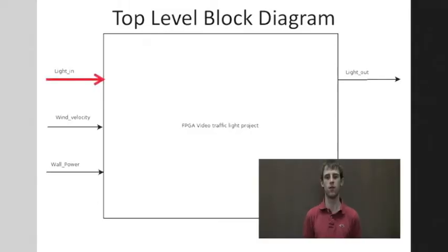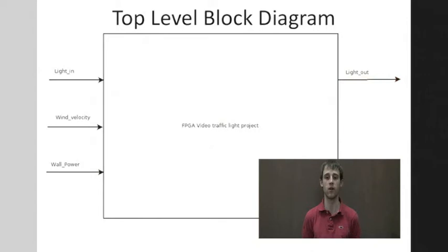Presented here is the top-level block diagram. Light in represents the light reflecting from the real-world objects into the cameras to produce four video streams. Wind velocity represents the force of wind on the cameras which will cause jigger in the video. One of our unique design concerns is that this may cause too much movement in the image processing block and distort the data. While power empowers the system, light out represents the light from the traffic light simulation boards.